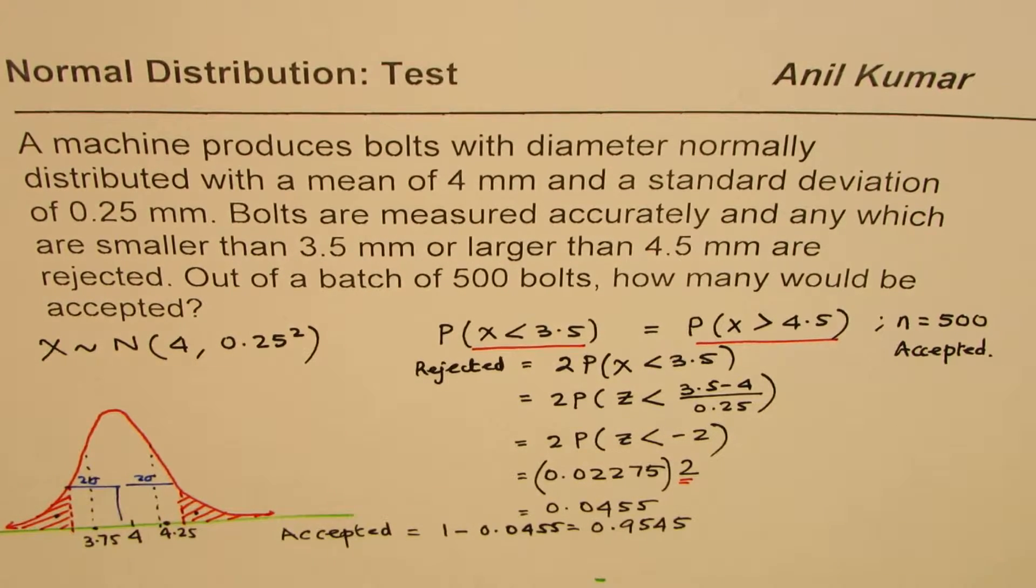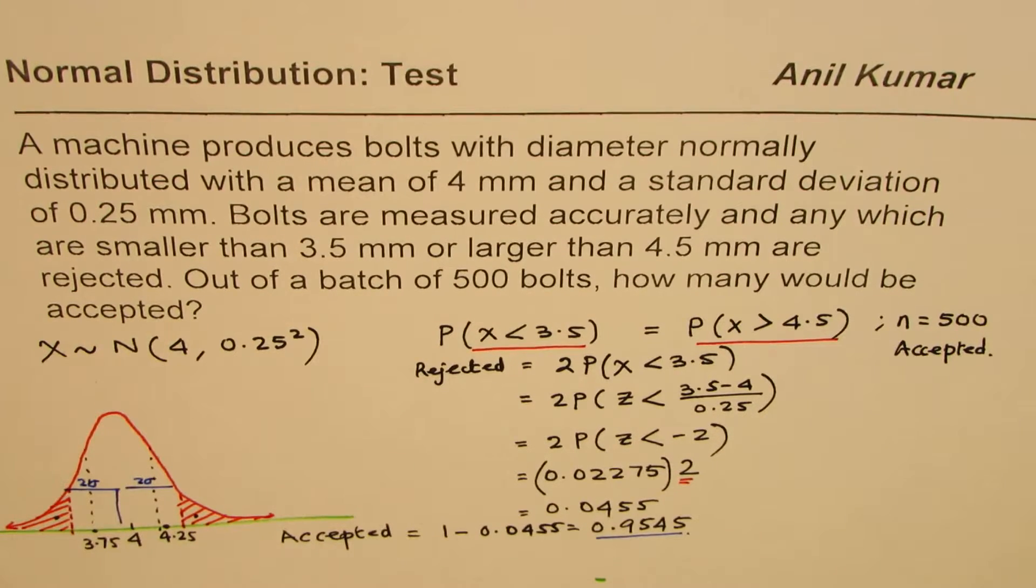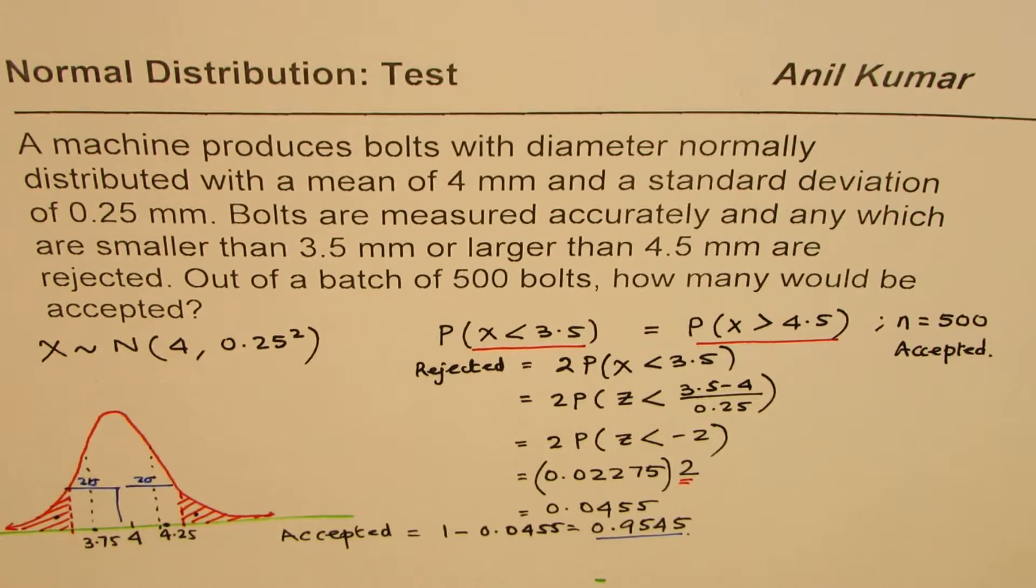1 sigma gives you about 68 percent and 2 sigma is about 95 percent, and that is what we get. So that gives you a hint that your answer is kind of right.